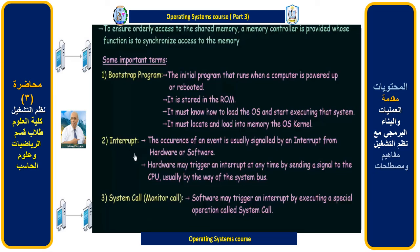The occurrence of an event is usually signaled by an interrupt from hardware or software. The CPU is always working, and when it is doing some work, the hardware or software may interrupt the CPU — it comes and tells the CPU to stop and execute a more important task. The hardware may trigger an interrupt at any time by sending a signal to the CPU, usually by way of the system bus.